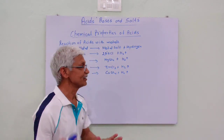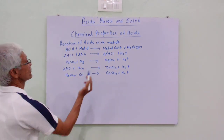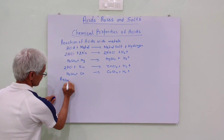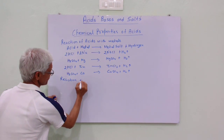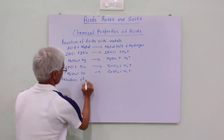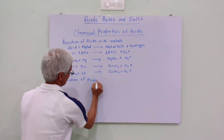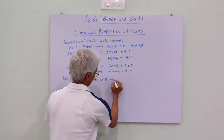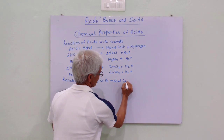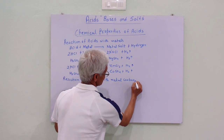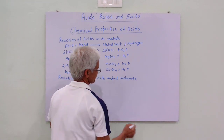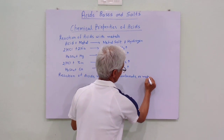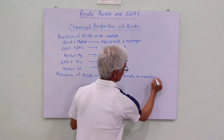And this is the sure test of hydrogen. Now we read the second property: reaction of acids with metal carbonate or metal bicarbonate.